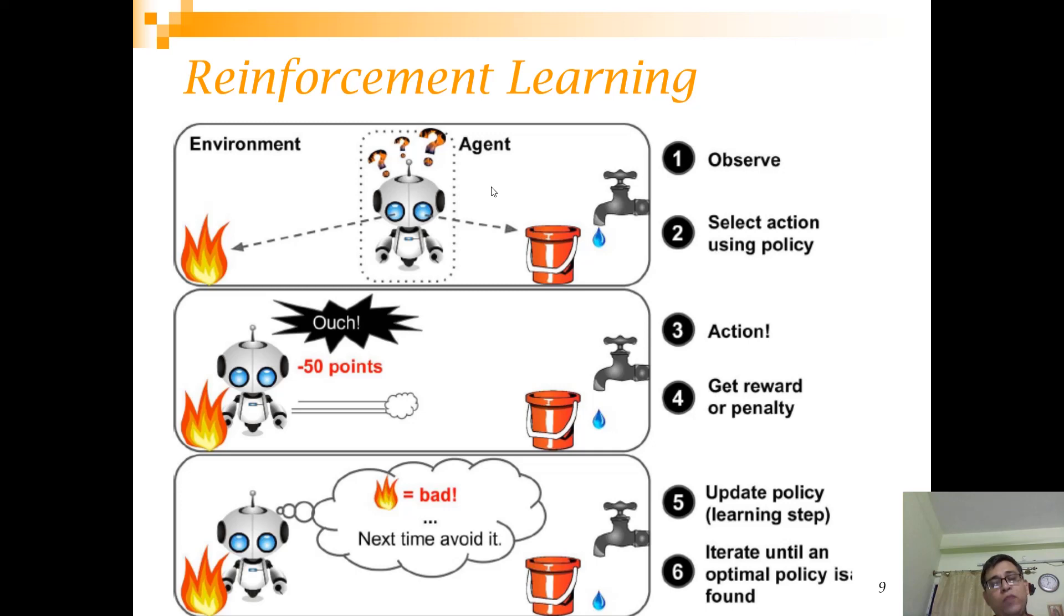This is one of the key contrasting factors with supervised and unsupervised learning. The agent actually wants to learn a policy of how to go to this tap and maybe collect water. There are rewards and penalties. Basically it observes and then it selects an action using policy. If it is getting a penalty, it will not update that policy. If it is getting a reward, then it will update the policy. So that's how it learns. Finally, it will learn to optimally go to the tap and collect water.